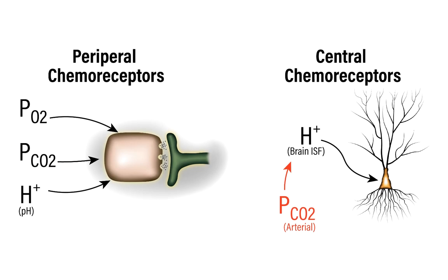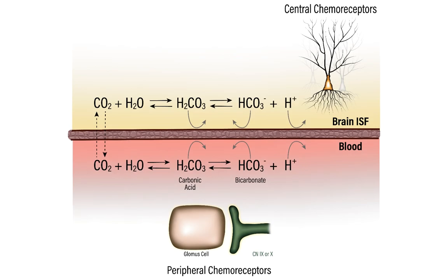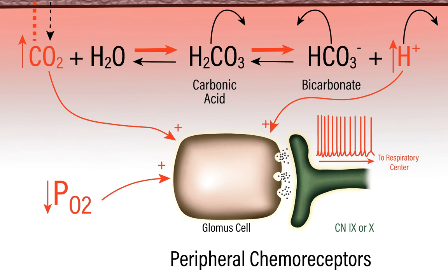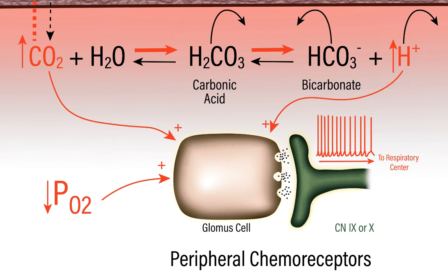So, to summarize: peripheral chemoreceptors are sensitive to arterial partial pressures of oxygen and carbon dioxide, and arterial pH. Central chemoreceptors are sensitive to brain ISF pH, which is largely determined by arterial PCO2. In most cases, the central and peripheral chemoreceptors work together cooperatively to produce appropriate changes in ventilation. A good example is aerobic exercise, which results in a reduction in arterial PO2 due to increased oxygen consumption, an increase in arterial PCO2 due to increased carbon dioxide production, and an increase in arterial proton concentration.